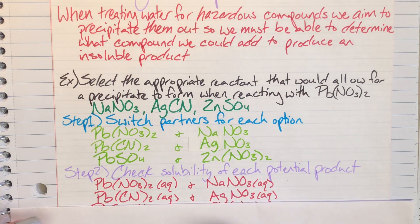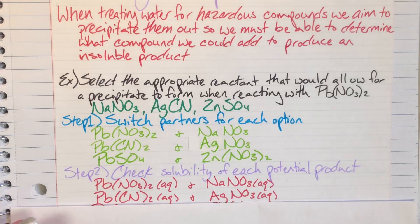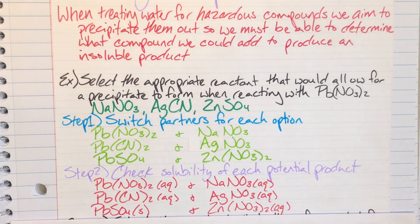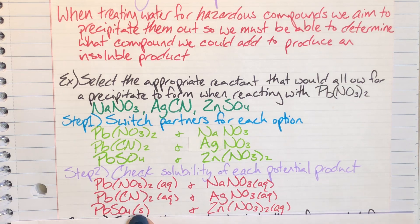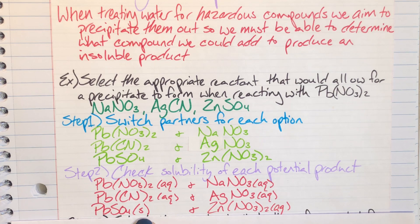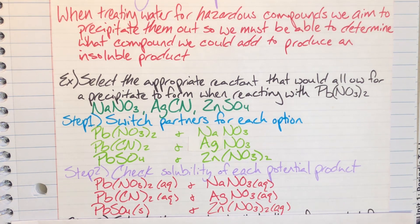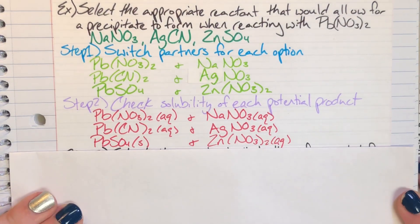Now I just need to check for the zinc nitrate. Nitrates again are going to be always soluble, so zinc nitrate will be soluble, but I have finally produced a product that is not soluble. I've finally made a precipitate, so this lead(II) sulfate is going to be my solid and it's going to be my precipitate.